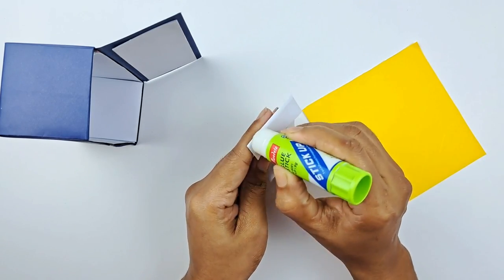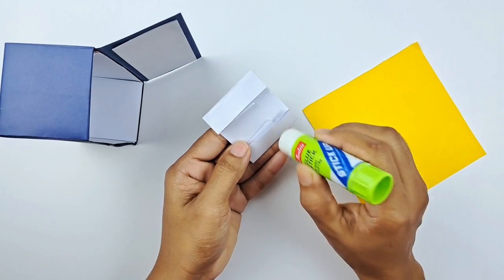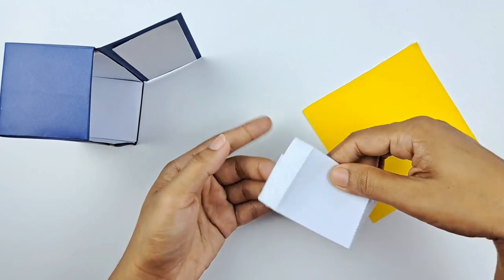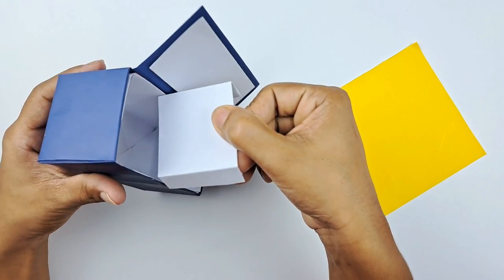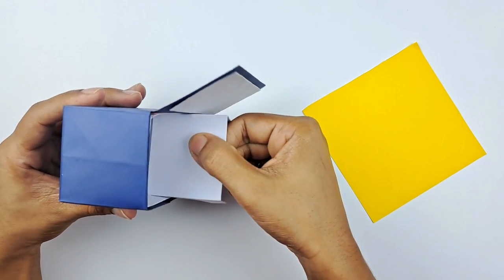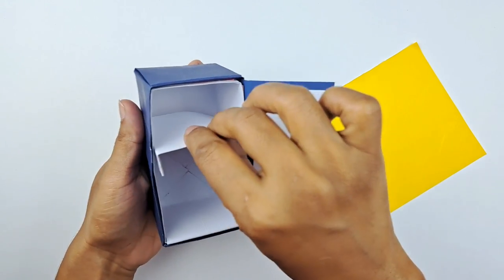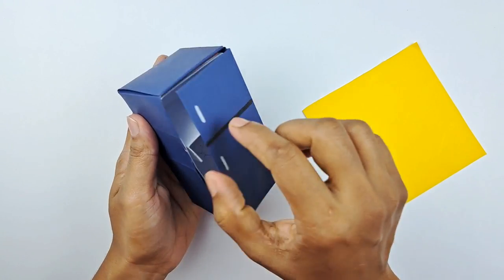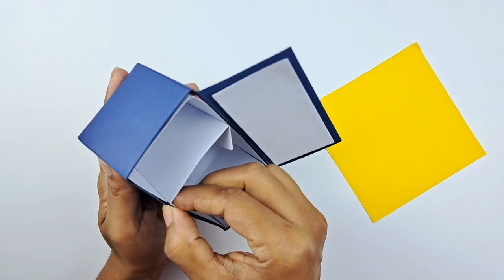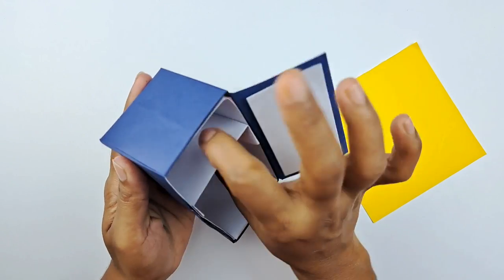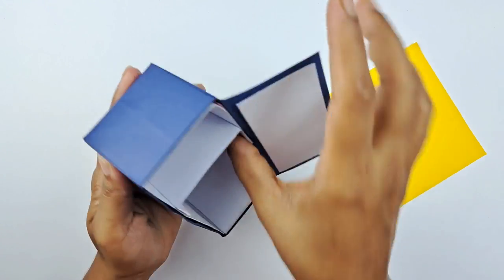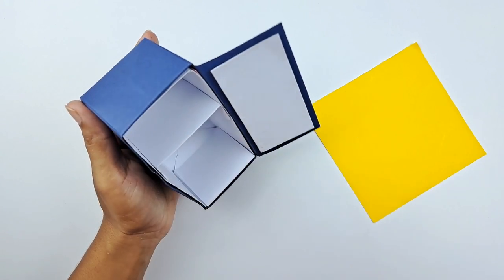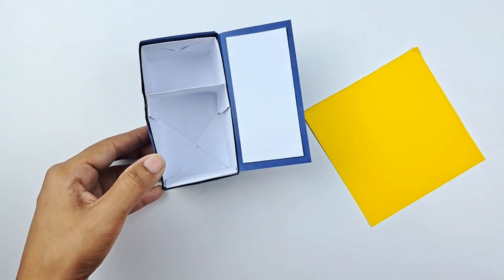We fold down the sides so we know that it fits into the mini fridge. A little bit more glue to stick it in half. Now we've got two different compartments, the fridge and the freezer. We've got some nice shelves for our mini fridge.